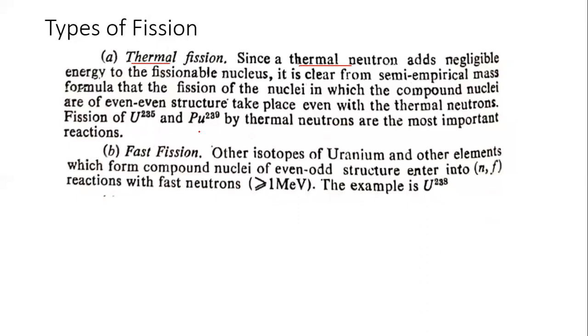Fast fission: Other isotopes of uranium and other elements which from compound nuclei or even-odd structure enter into reactions with fast neutrons. Fast neutrons have speed greater than one mega-electron-volt. If one mega-electron-volt is the speed of a neutron, that kind of fission is called fast fission. An example is uranium-238.